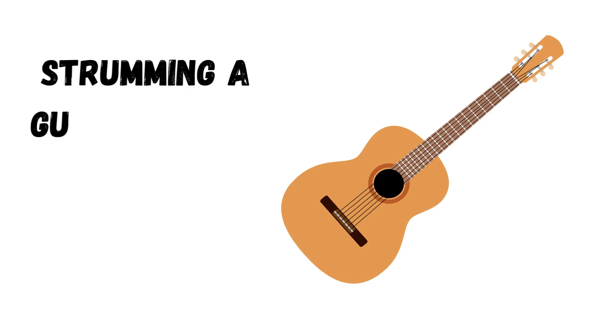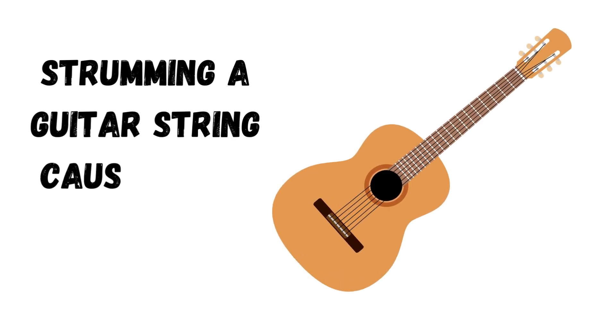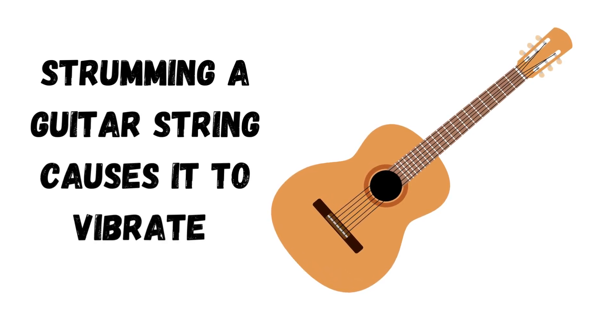First, we have to look at how sound travels. Sound travels in sound waves, which are vibrations in the air. For something to make a sound, it has to vibrate — move back and forth very rapidly. How fast or slow it vibrates makes changes in how the sound is heard. Take a guitar, for example: when you strum a string, it starts to vibrate.